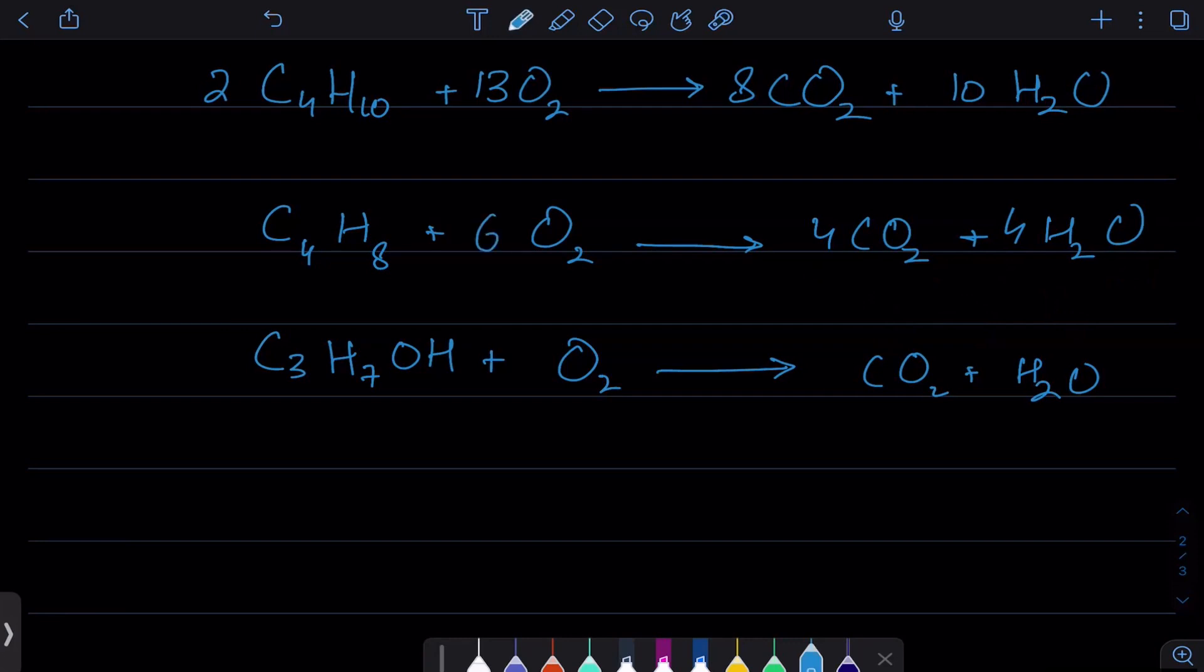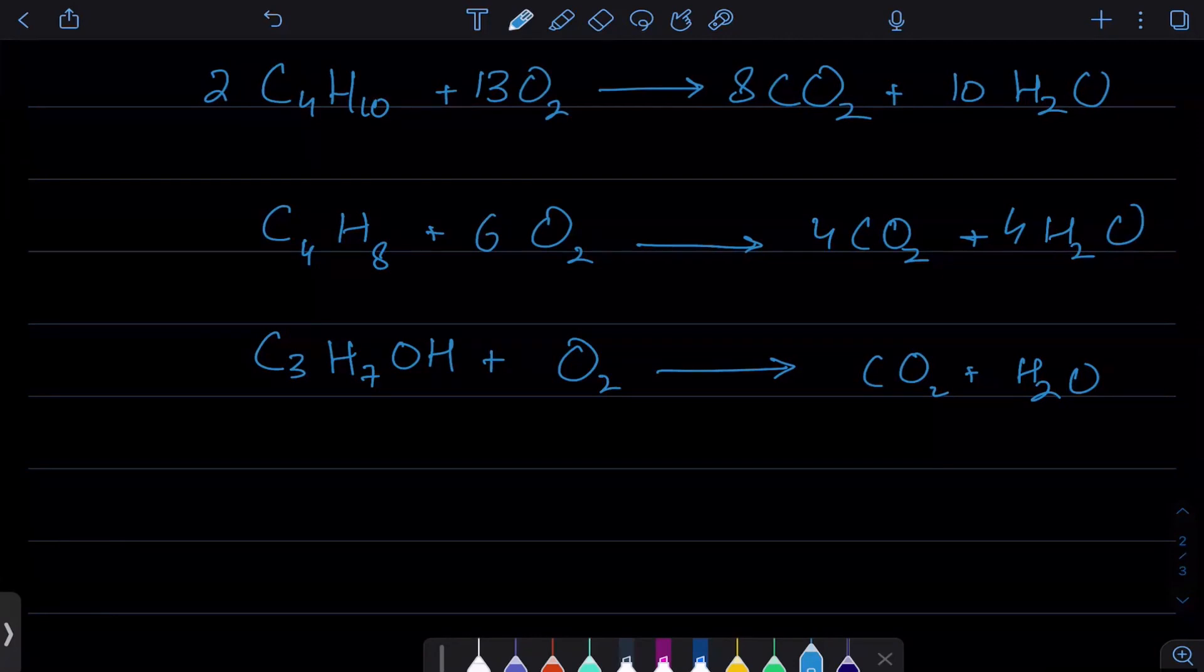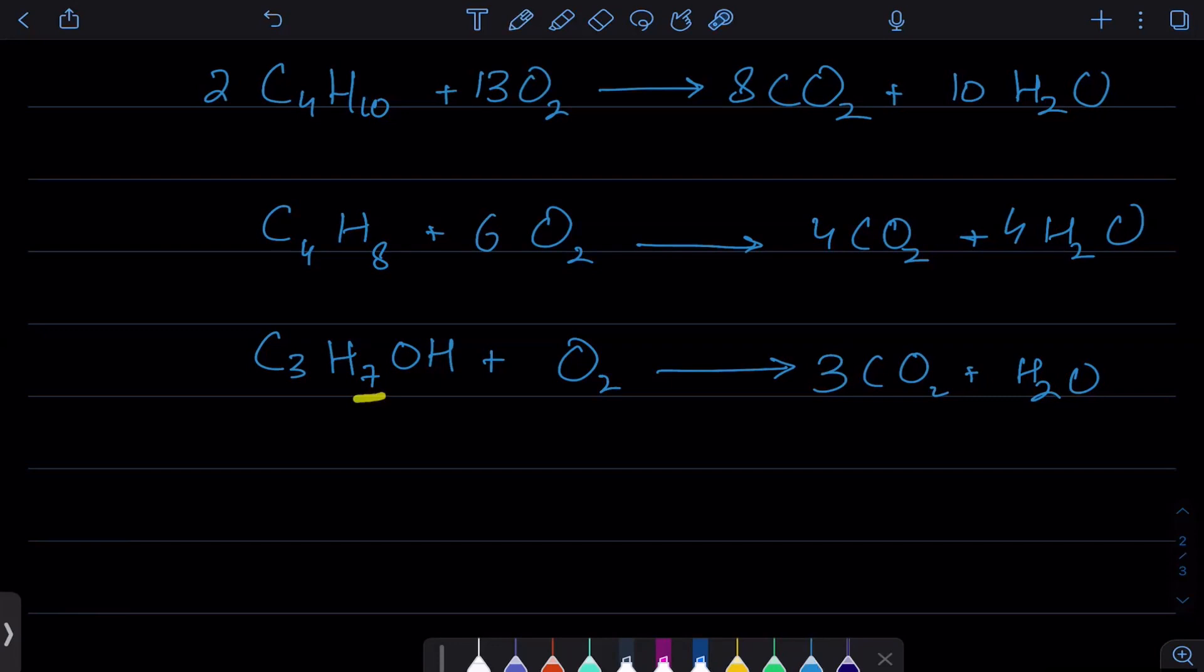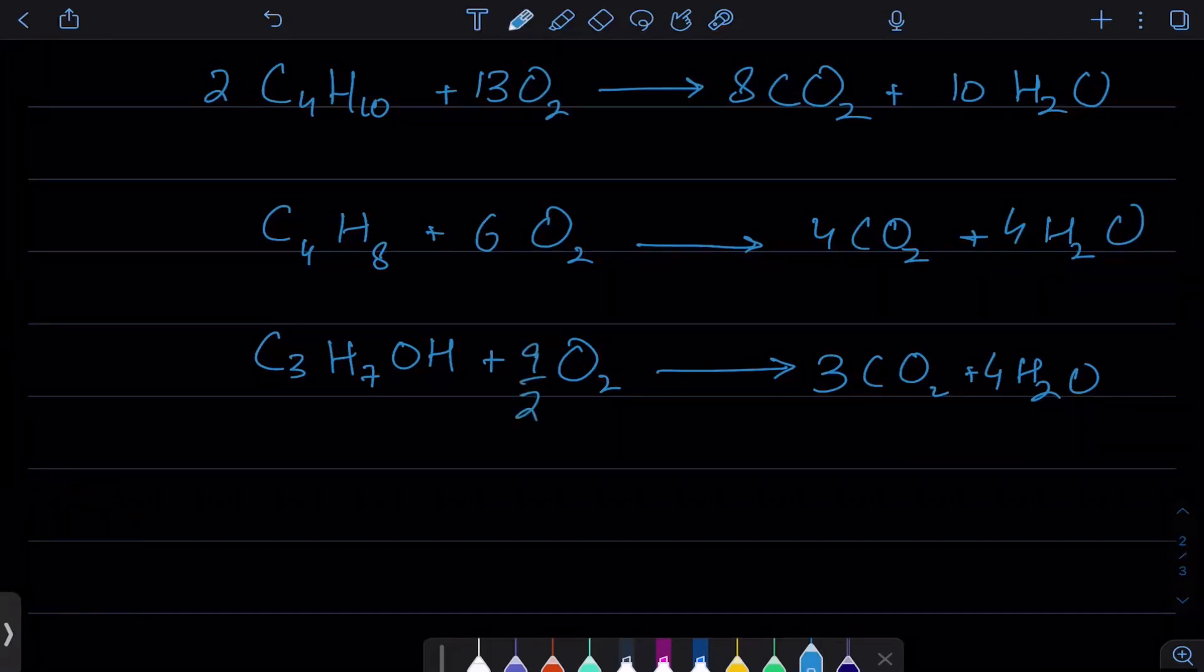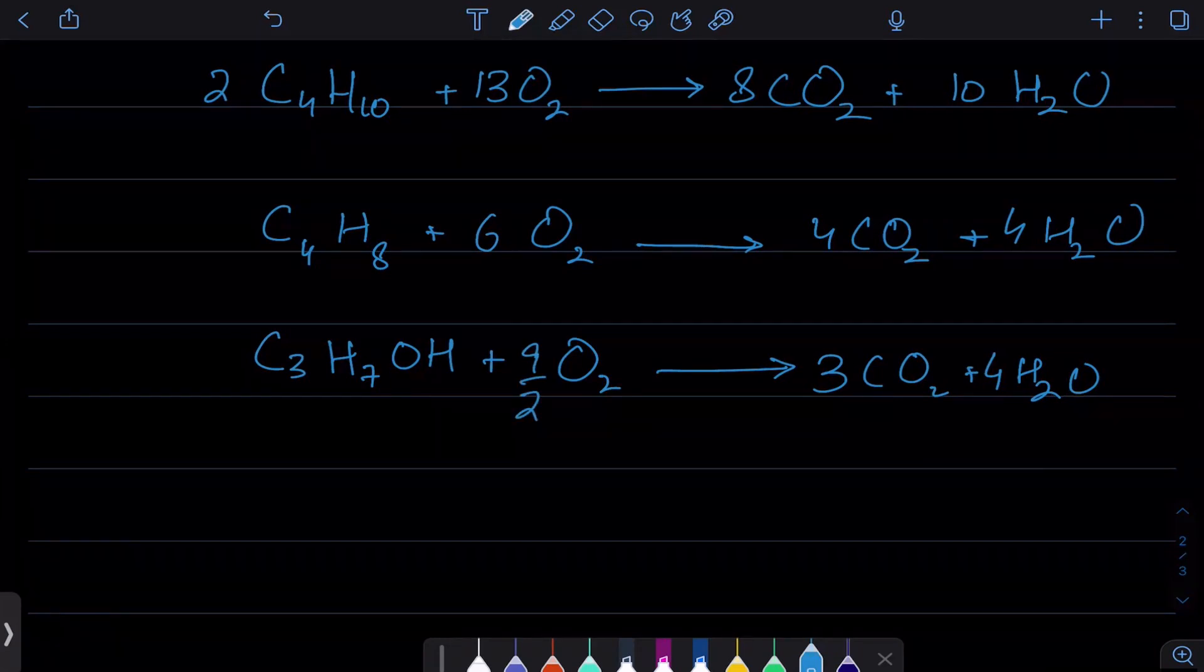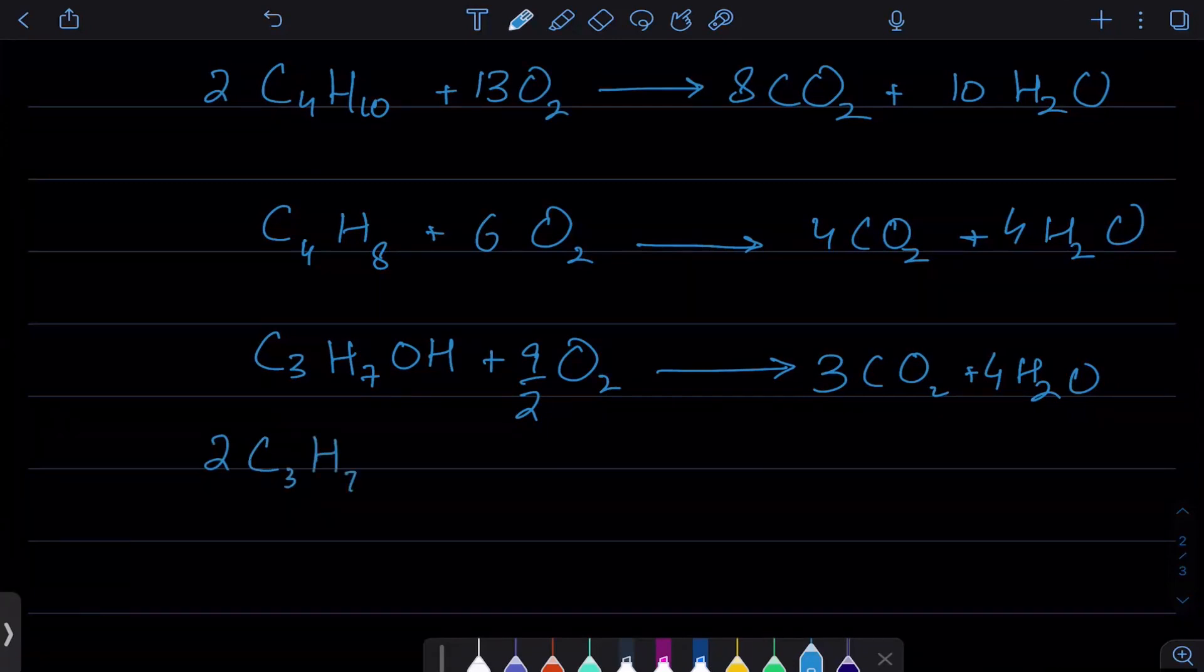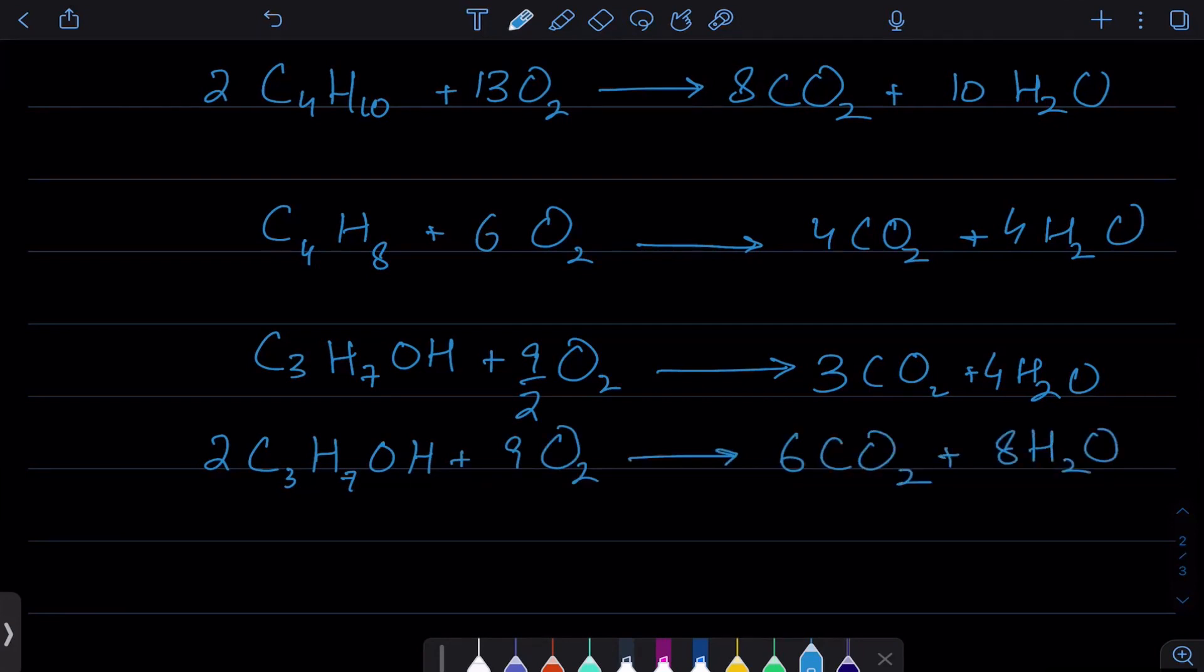Let's try the next one: C3H7OH. So 3 carbon dioxide. Notice I have 7 and 1 here, total 8 hydrogen, so 4 water. Now I have 3 times 2 equals 6 and 4 times 1 equals 4, 6 plus 4 equals 10 oxygen. But there's also oxygen in the alcohol, so I'm left with 9. So it's 9 over 2. If you're not comfortable with fractions, just double the whole thing: 2 C3H7OH plus 9 O2 makes 6 CO2 plus 8 H2O.